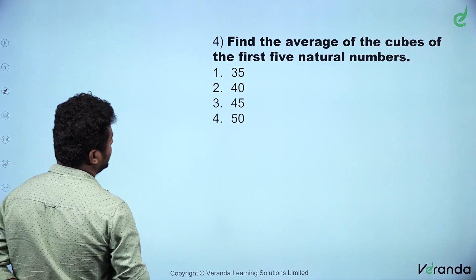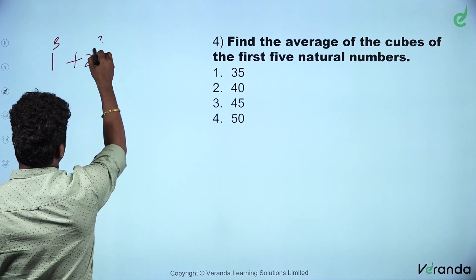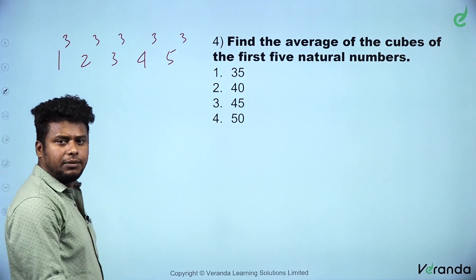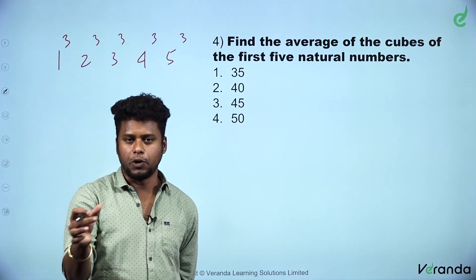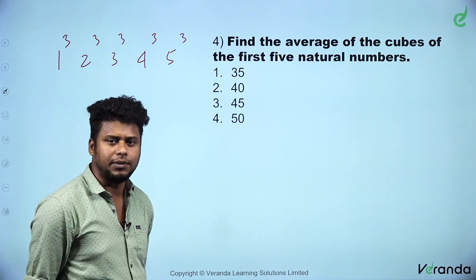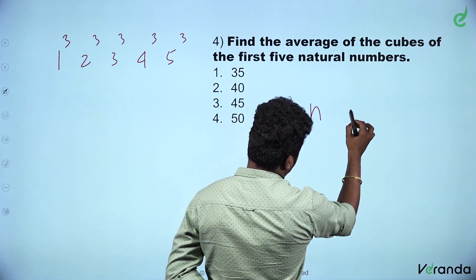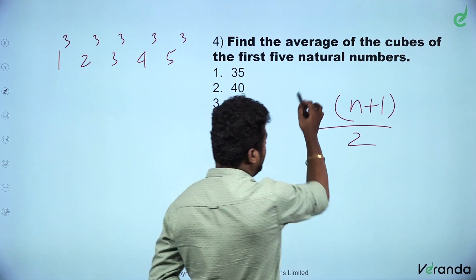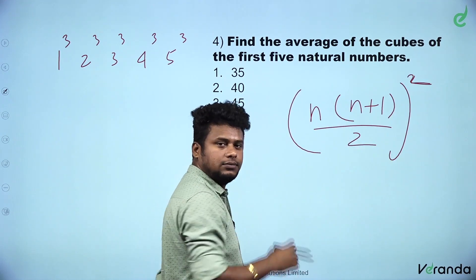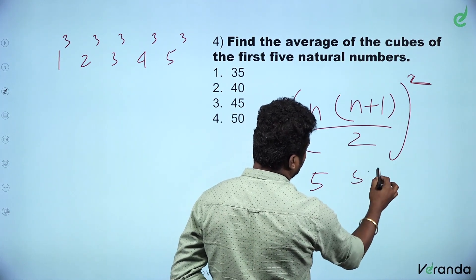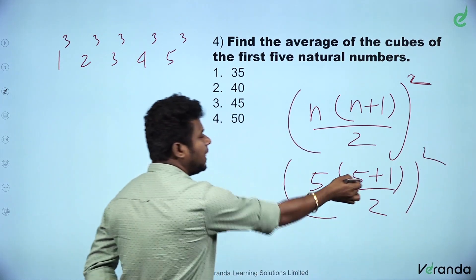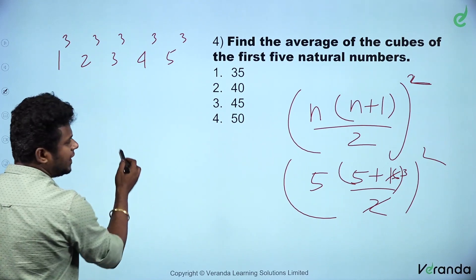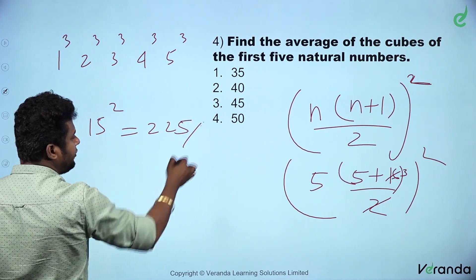Find the average of the cubes of the first five natural numbers: 1³, 2³, 3³, 4³ and 5³. Using the formula for sum of cubes of first n natural numbers: [n(n+1)/2]², whole square. With n equals 5: 5 into 6 divided by 2 equals 15. 15 squared is 225. Now divide by 5 for the average.